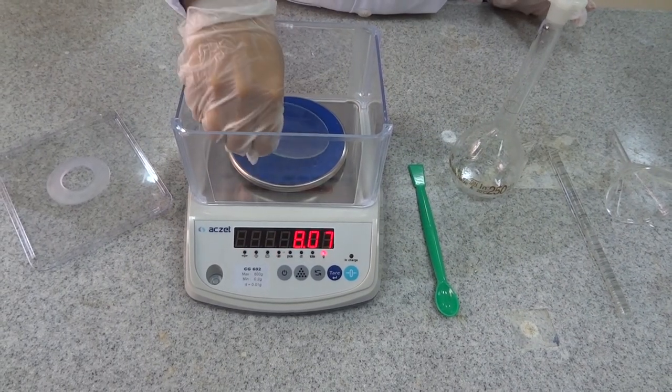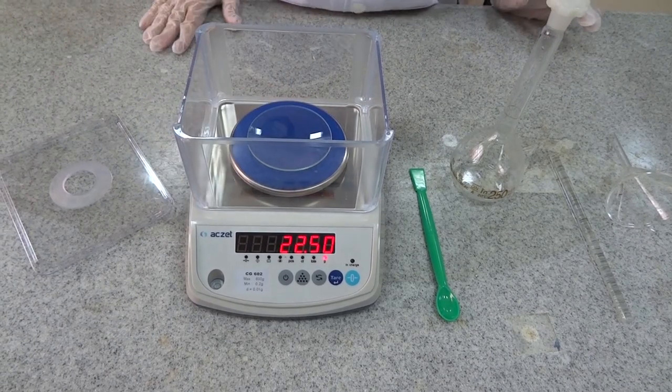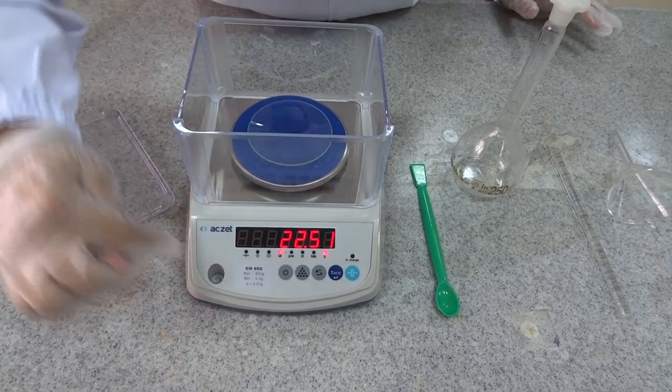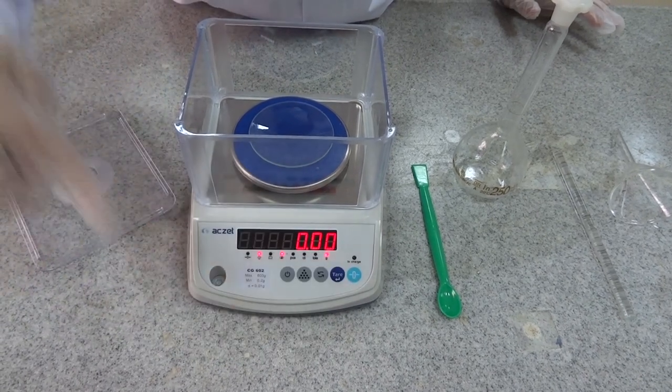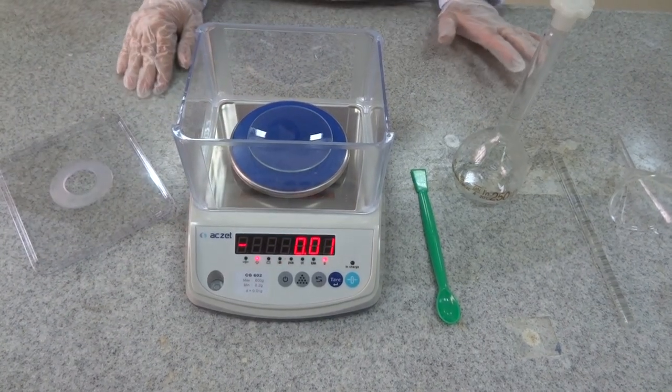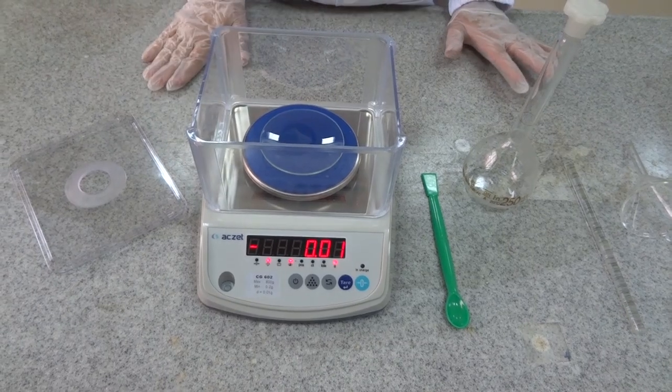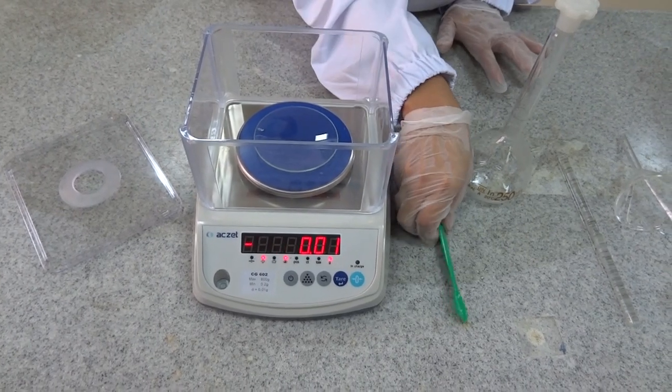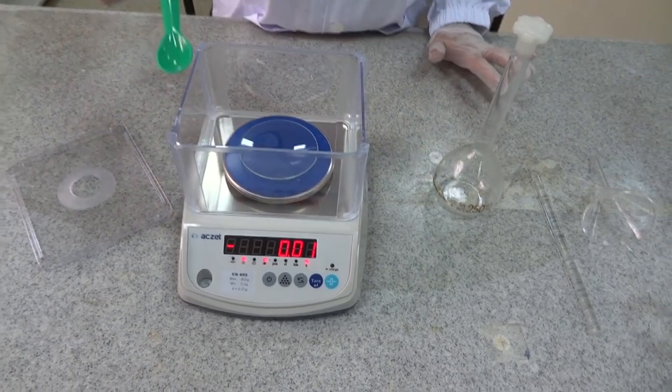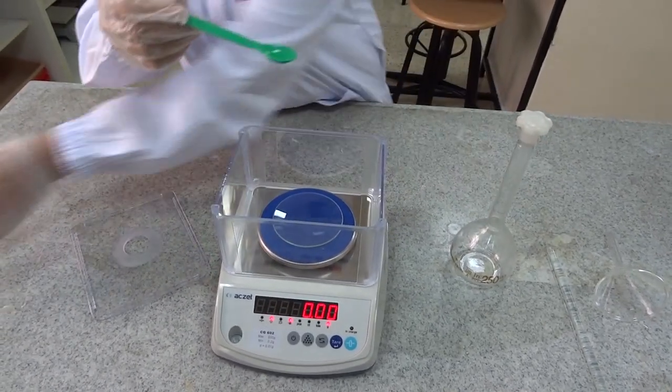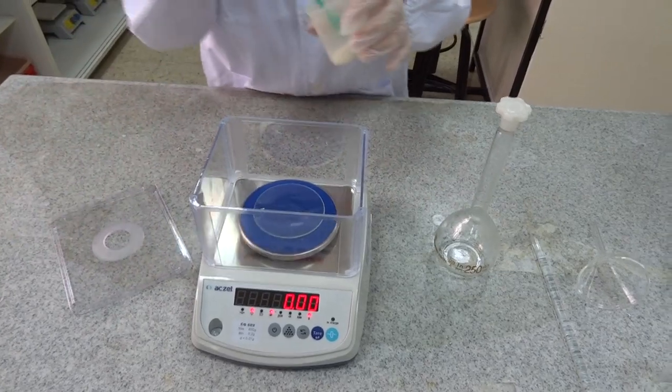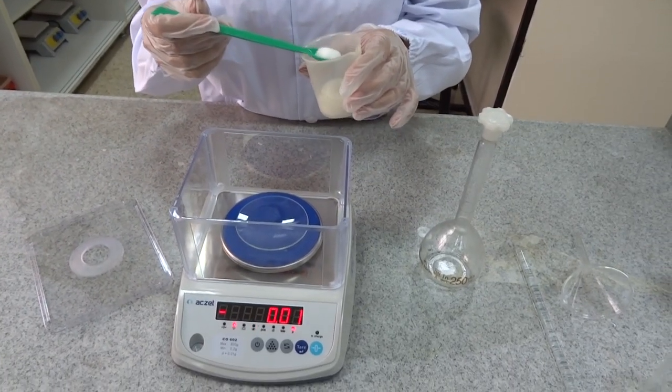On the balance, we put a watch glass to hold the sugar. It's clear that the balance showed the mass of the watch glass. This mass is not needed, so we press the button TAR to start from zero. Accordingly, the mass of the watch glass is not included in the result shown on the balance. Now, use the spatula to weigh 5.12 grams of sugar.